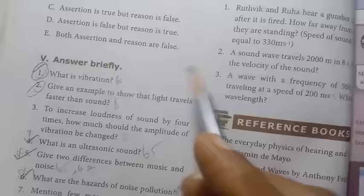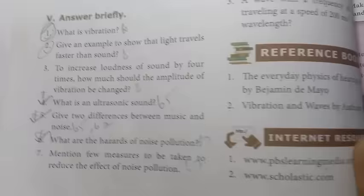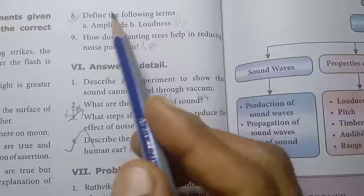Once you memorize, do Unit 6 Sound. The Sound lesson, look at the one marks full and the other one. Roman number 5, answer briefly: What is vibration? Give an example to show that light travels faster than sound. What is ultrasonic sound? Give two differences between music and noise. What are the hazards of noise pollution?